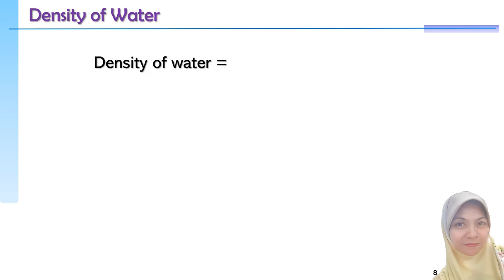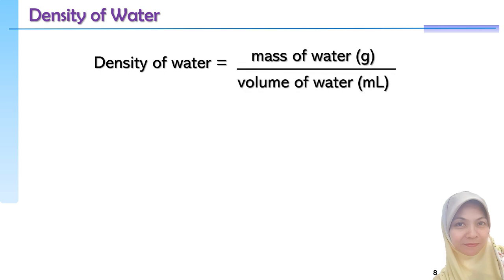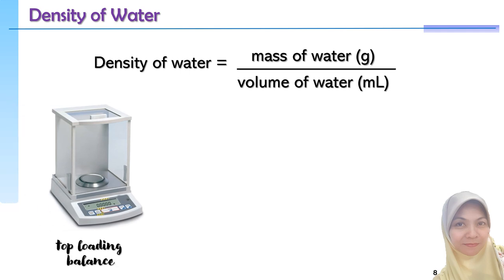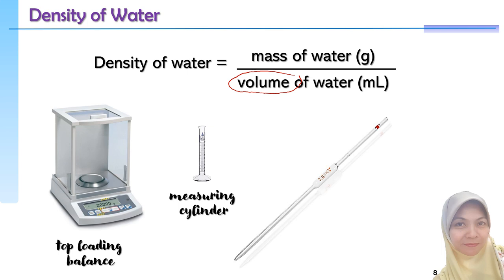Let's look again at the relationship between density of water, mass of water, and volume of water. Density of water equals mass of water divided by volume of water. Mass of water will be measured using a top-loading balance or analytical balance, while volume of water will be measured using a measuring cylinder, pipette, or burette.